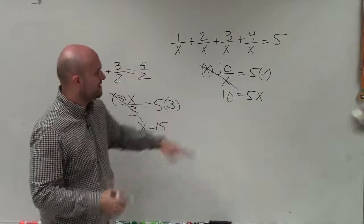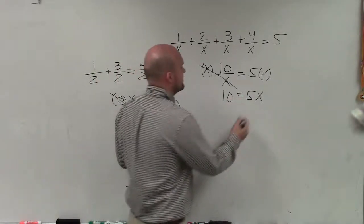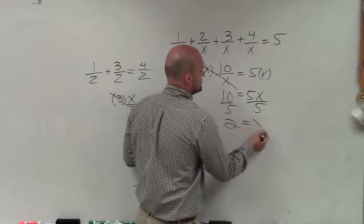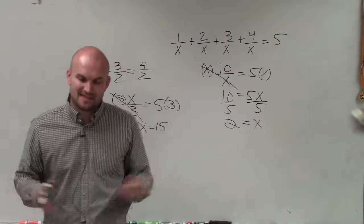Now I have a linear equation that I can undo multiplying by 5 by dividing by 5. Therefore, 2 equals x. Thanks.